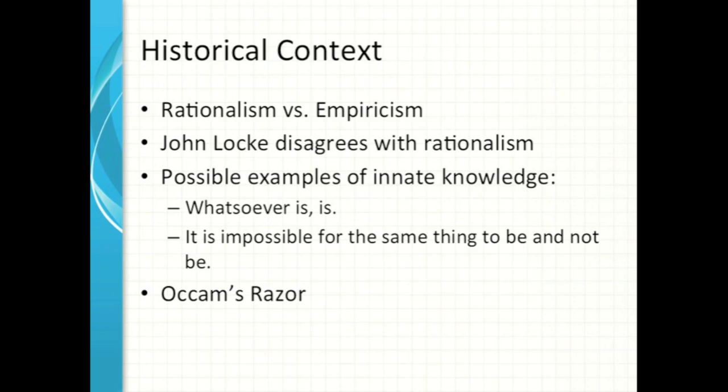Descartes and other rationalists would say that there are certain truths on which all of mankind agrees, and because of this, those ideas must be innate. John Locke would agree that there are certain truths on which mankind agrees, but he says there are other ways to show how that agreement occurs. He looks at two possible examples of innate knowledge, and you can see here the two statements. The first one is, whatsoever is, is, as well as, it is impossible for the same thing to be and not be. These are statements that a rationalist may consider innate knowledge. They would say everyone has this.